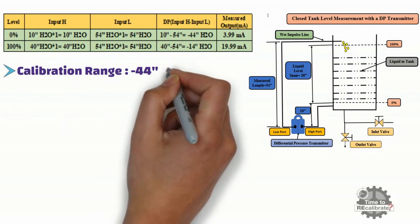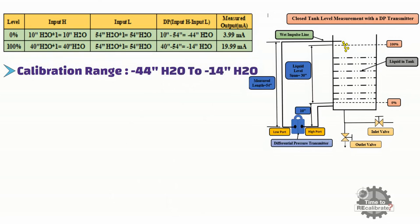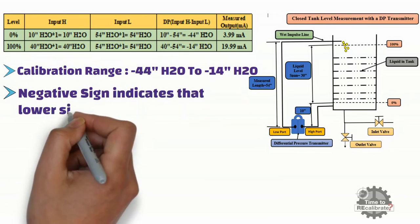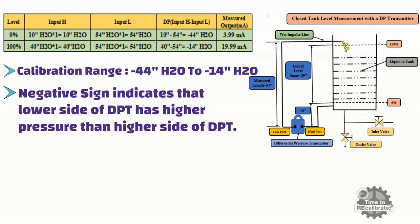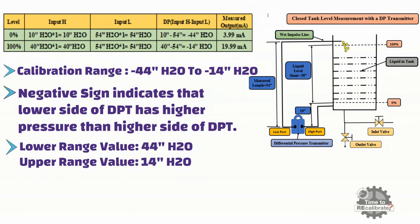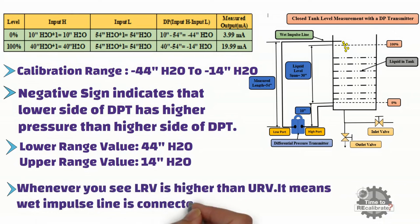As you can see from the table, the calibration range is minus 44 inches H2O to minus 14 inches H2O. Note that you will always get a negative range when measuring level in a closed tank with a wet impulse line. The negative sign indicates that the low port of the DP transmitter has higher pressure than the high port. Since you cannot set a negative calibration range in a DP transmitter, set 44 inches H2O as the lower range value and 14 inches H2O as the upper range value. Whenever the lower range value is higher than the upper range value, it means a wet impulse line is connected to the low port.